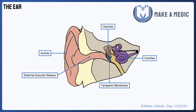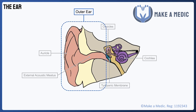The first step to understanding hearing loss is understanding the different parts of the ear. Starting with the outer ear, we have the auricle or pinna, which is the visible part of the ear that is outside the head. There is also the external monaural acoustic meatus, otherwise known as the ear canal, which runs from the outer ear to the middle ear.